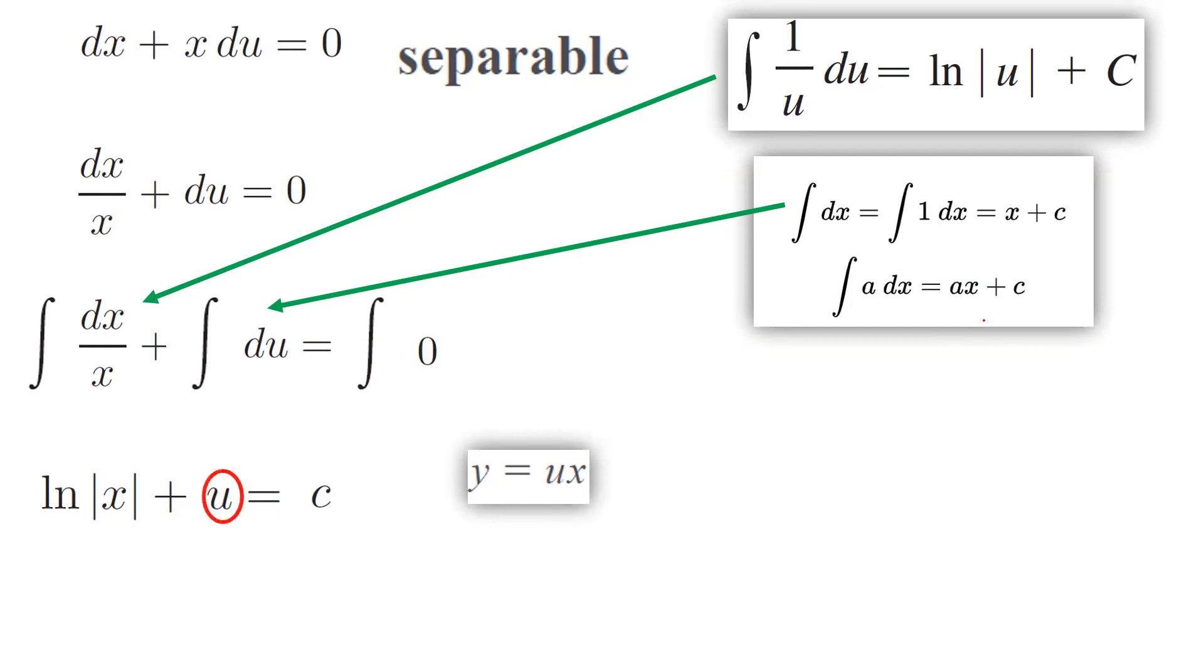So this becomes ln|x| + y/x, which is coming from the substitution, equals c.